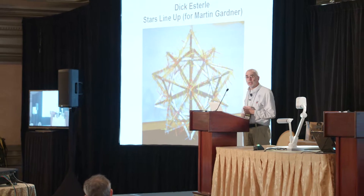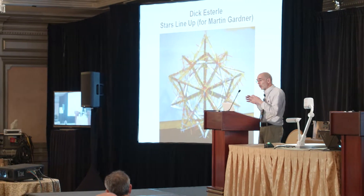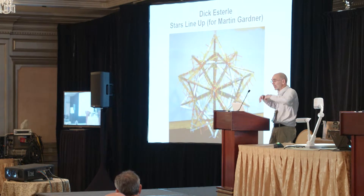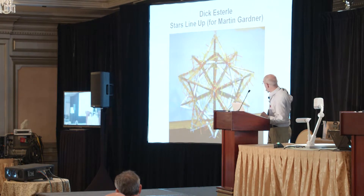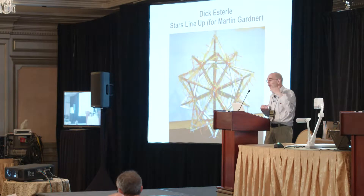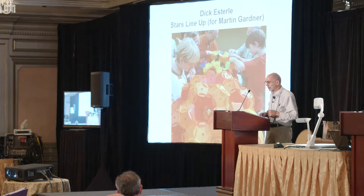Dick Esterly has designed something like an instant sculpture kit — you get metal angle brackets and cable ties from Home Depot and build a stellated icosahedron. Dick is probably over at the site setting things up, but don't worry if you don't know what he looks like — he looks like that person in the back there.